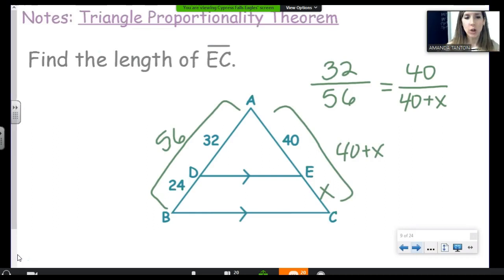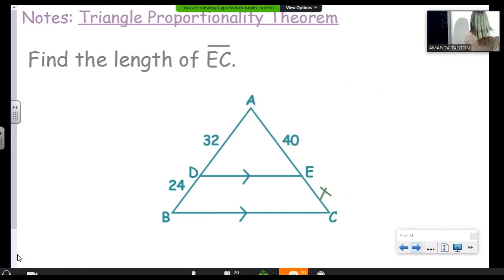That is not as easy of a proportion to solve. You can't just cross, multiply, and divide. We have to do these extra steps where we added things together. There's room for error. It's more complicated. Now, with the TPT, now with the new theorem, it is beautiful. You do 32 is to 24, as 40 is to X. You cross, multiply, and you call it a day.